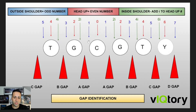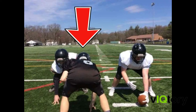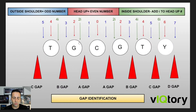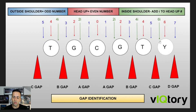Speaking of the outside shoulder, now including the inside shoulder — instead of saying something like 3.5, we like to take the head-up number and put an 'I' in front of it. So if you are in a 2i alignment, you are on the inside shoulder of the guard. If you are in a 4i alignment, you are on the inside shoulder of the tackle. And if you are in a 6i alignment, you are on the inside shoulder of the tight end.